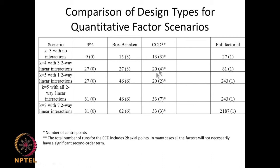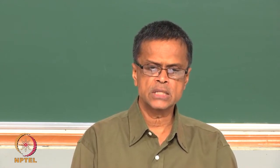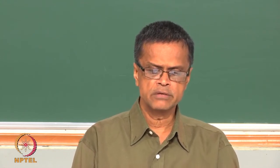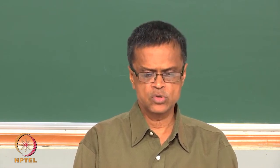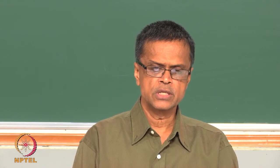Both CCD and Box-Behnken give enough center points, which is very important for estimating errors. CCD appears to be the best if you are looking at a quadratic or higher order model. We have now looked at a large number of design strategies — screening designs and second order designs including Box-Behnken, Central Composite Design, full factorial 3-level design, and fractional factorial 3^(k−q) designs.